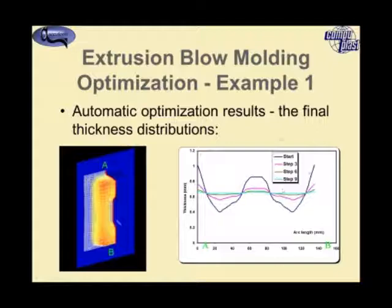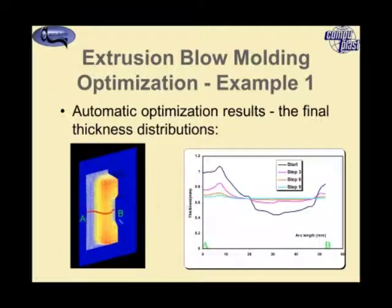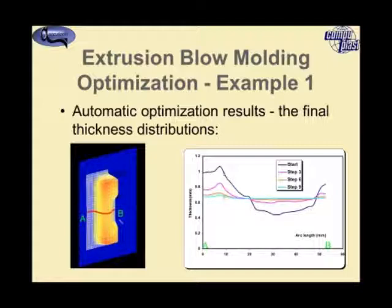Looking at the cross-sectional view, there is also a variation in this direction initially that is quite large — going from just over 1 mm to around 0.4–0.5 mm. By optimizing the parison shape you can also minimize that variation to achieve a much more even thickness distribution.